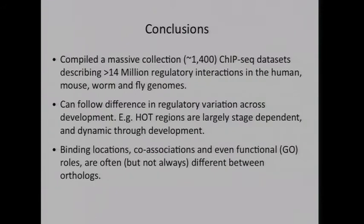In conclusion, we've compiled a massive set of ChIP-seq data sets available for everyone to use. We can use this to look at regulatory variation within a species — regulatory information does change across developmental stages, which you can tease out from worm and fly data. Across species, binding locations, co-associations in particular, and GO analysis can all be different. The types of genes they're binding can be very different across different organisms between homologous orthologs, so regulatory information can be quite divergent.